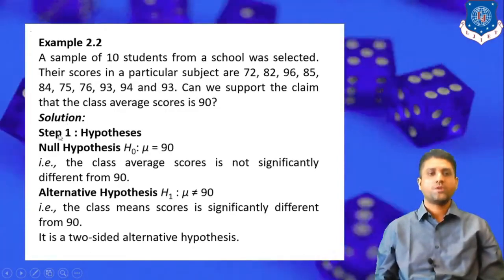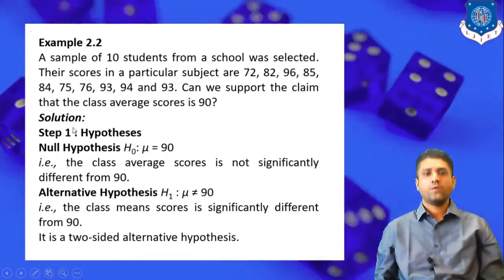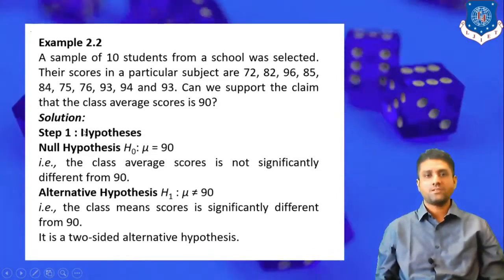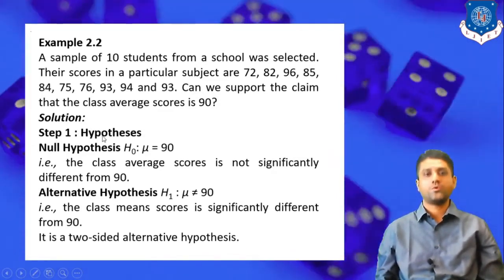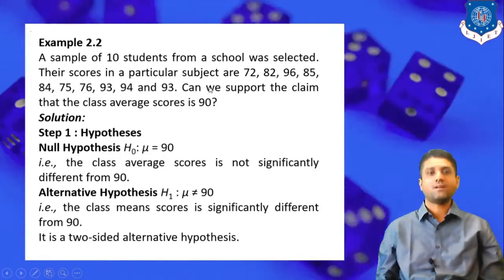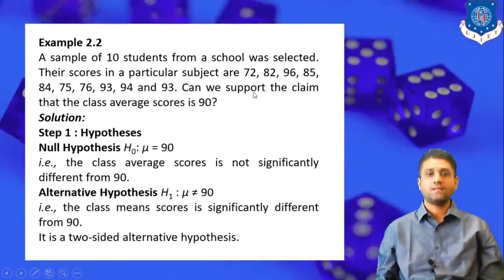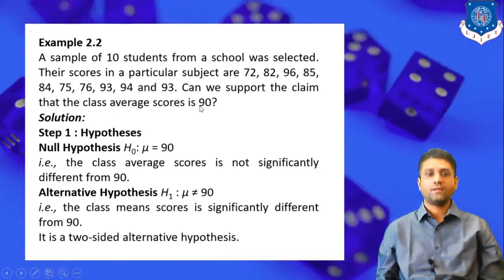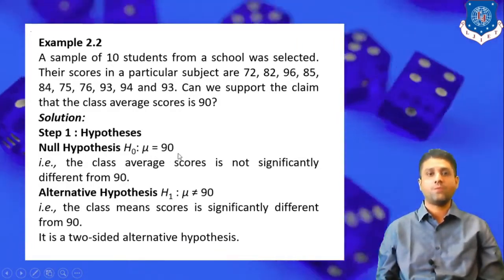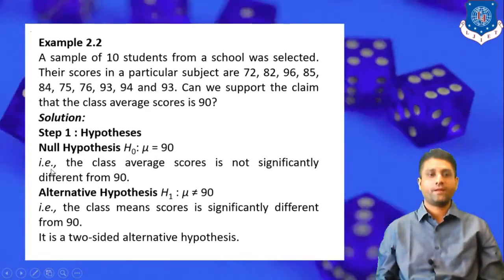Let us start the solution. Step 1: we have to define the hypothesis. First of all, we define the null hypothesis H₀. Whatever is given in the definition, we assume it may be right. The question states that the average score of 10 students is 90, so we assume the mean is 90 — that is, the mean is not significantly different from 90. The class average score is not significantly different from 90.